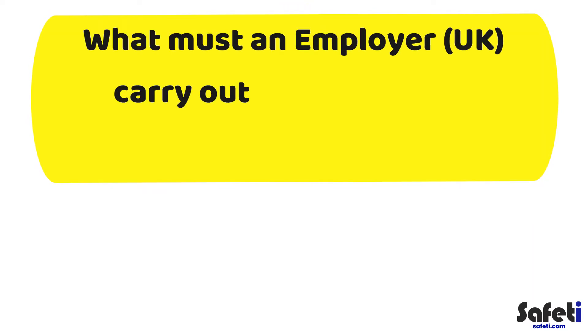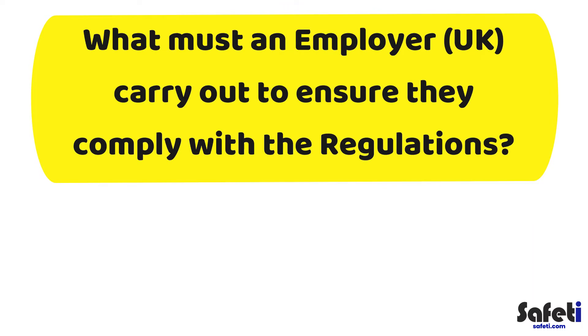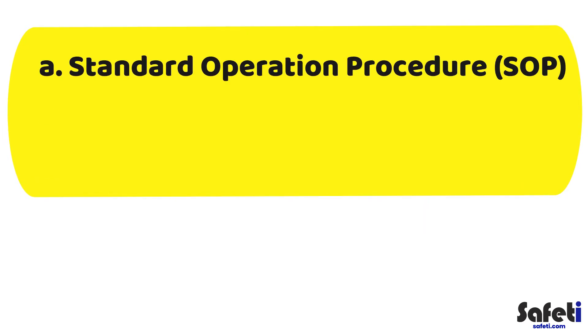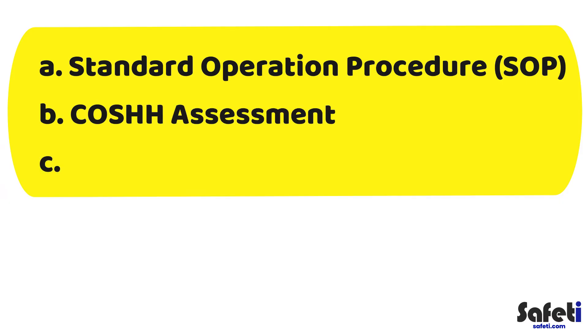The answer to question two was C — fume. Question three, our last one: what must an employer in the UK carry out to ensure they comply with the COSHH regulations? Is it A — a Standard Operating Procedure (SOP), B — a COSHH assessment, or C — a DSE assessment?